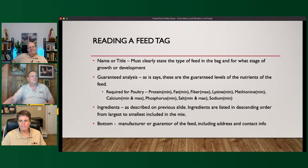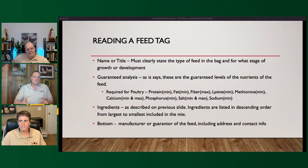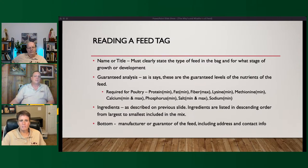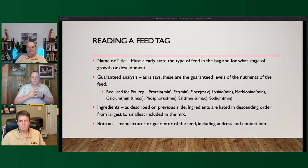All right, so what's on a feed tag? The top of the feed tag has to clearly state what type of animal it's for and what class — chick starter, chick grower, layer, etc. That has to be at the top. If you don't see that, it should be a red flag. A lot of people share tags with me, asking 'what do you think of this feed?' I tell them what I see — I don't hold back, I don't sugarcoat it.